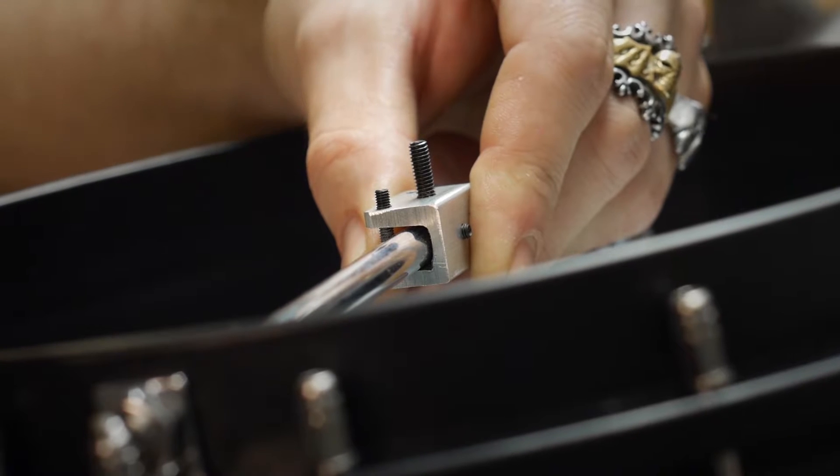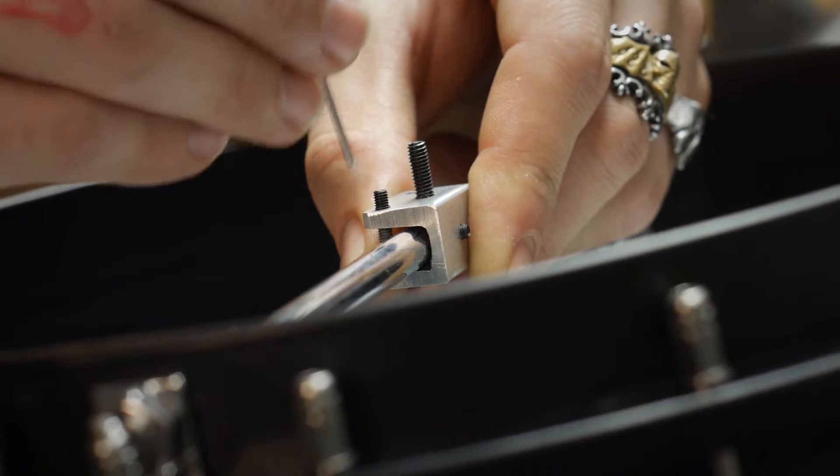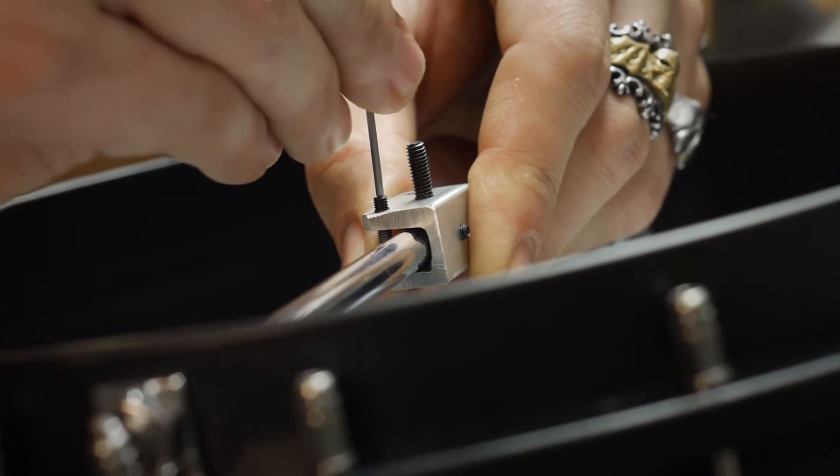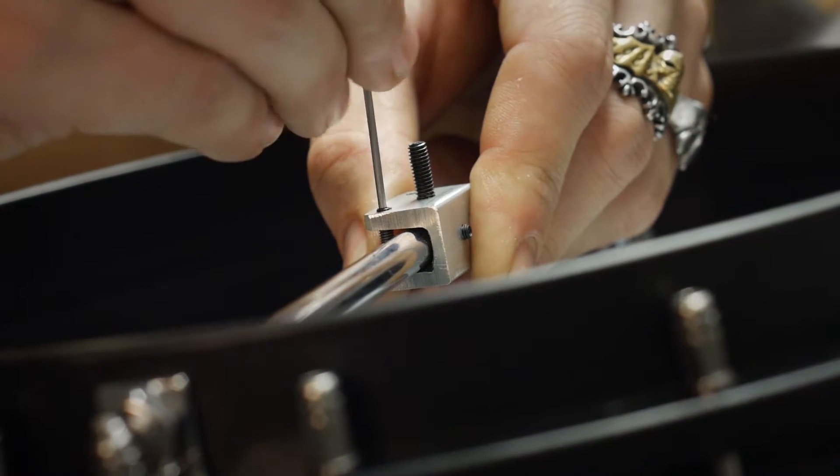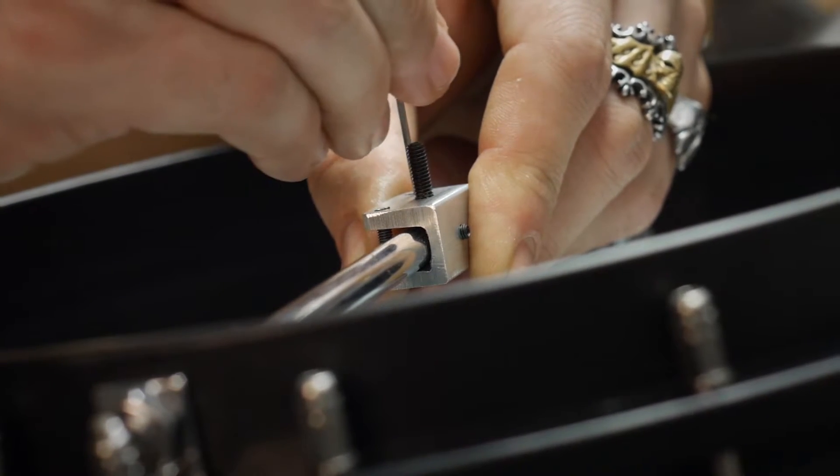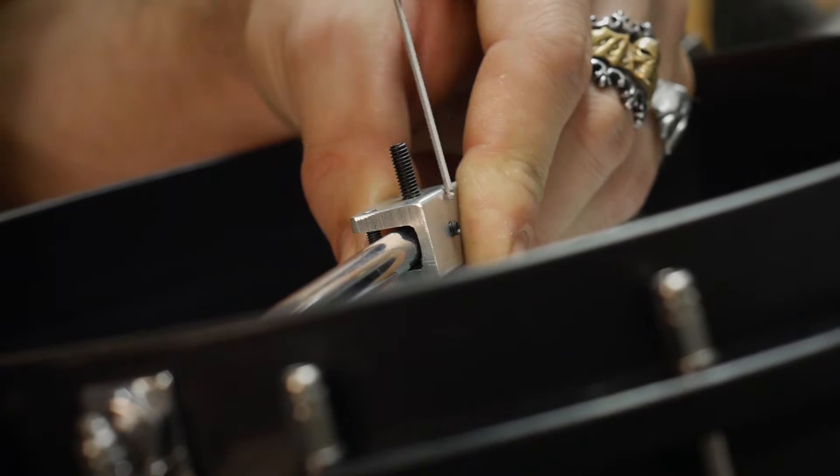Okay, so here all we're going to want to do, we're going to take our smaller Allen wrench and tighten down the front two set screws first before any other. And then after those two are tightened, you can go ahead and tighten this guy in the back.